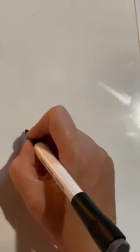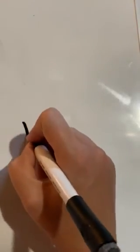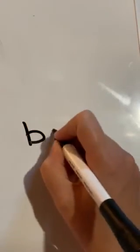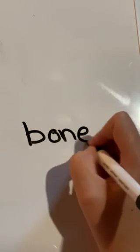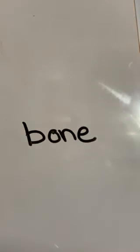What does a dog like to chew? What does a dog like to chew? A bone. A bone. All right.